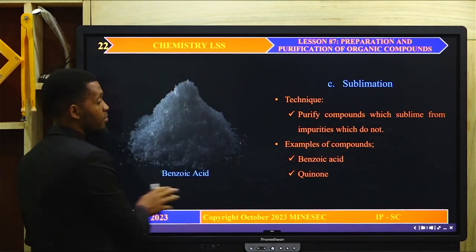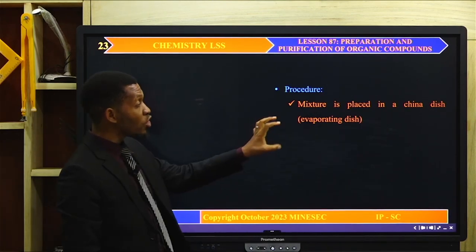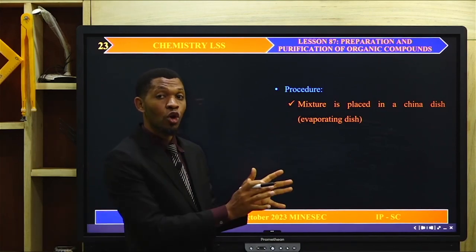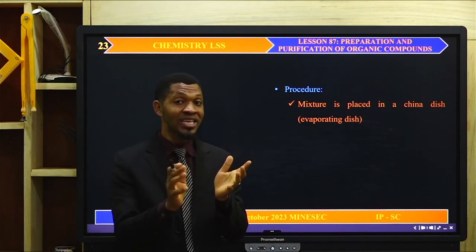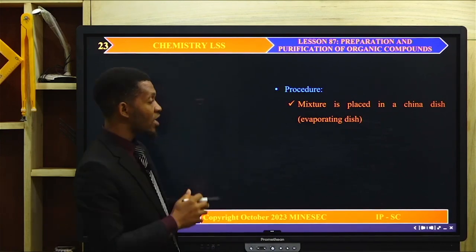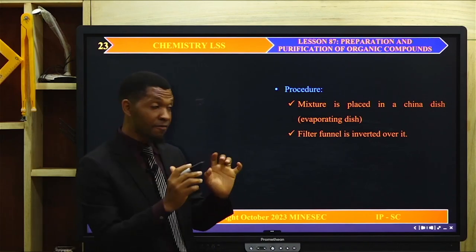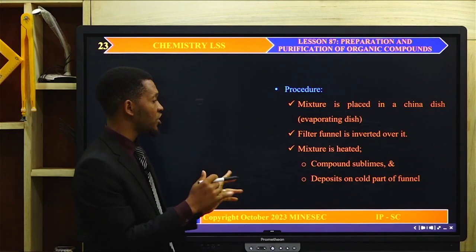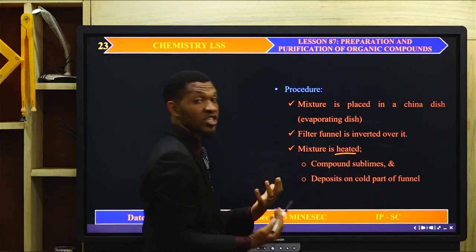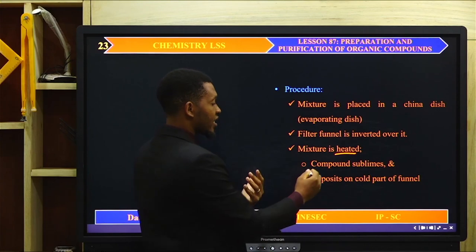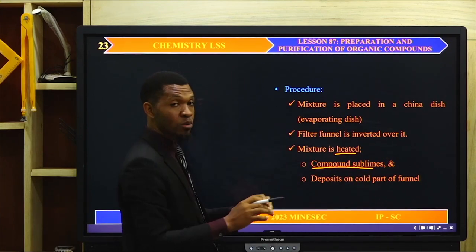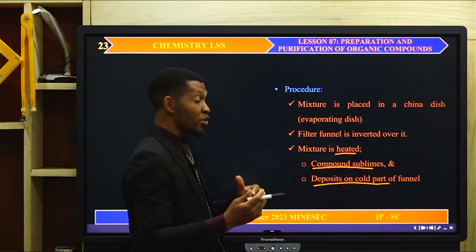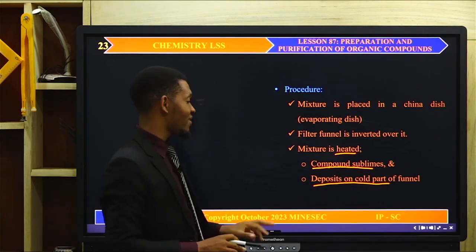The procedure for sublimation: the mixture is placed in an evaporation dish — the mixture of the organic compound that sublimes and the impurities that do not sublime. A filter funnel is inverted over the mixture in the evaporation dish. When the mixture is heated, the compound will sublime and then deposit on the colder parts of the funnel. The impurities that do not sublime will remain in the evaporation dish.